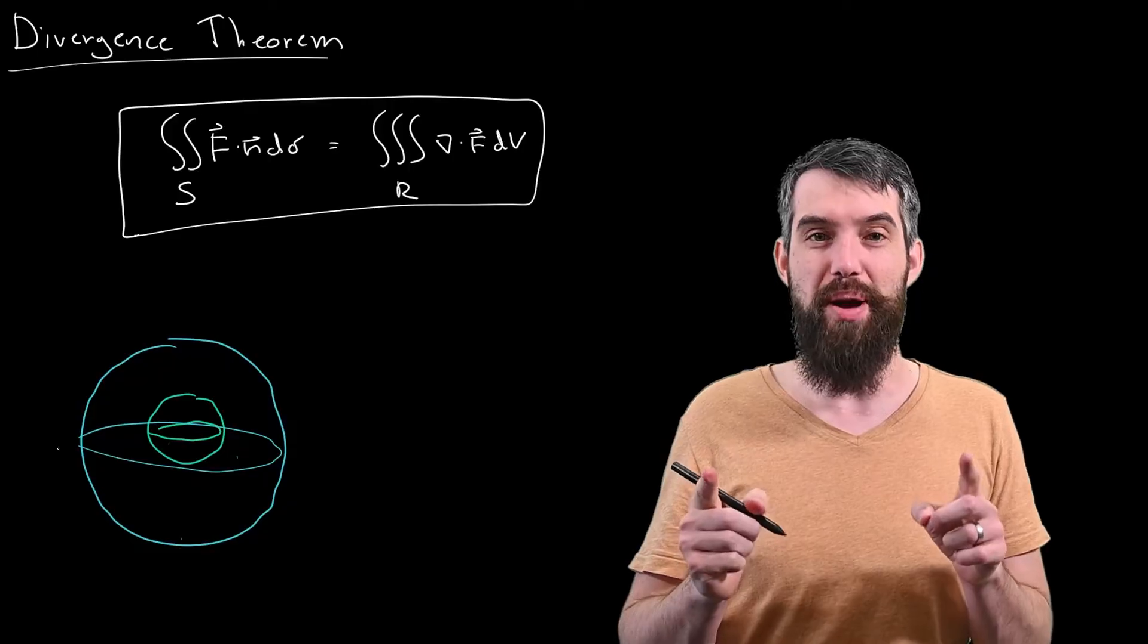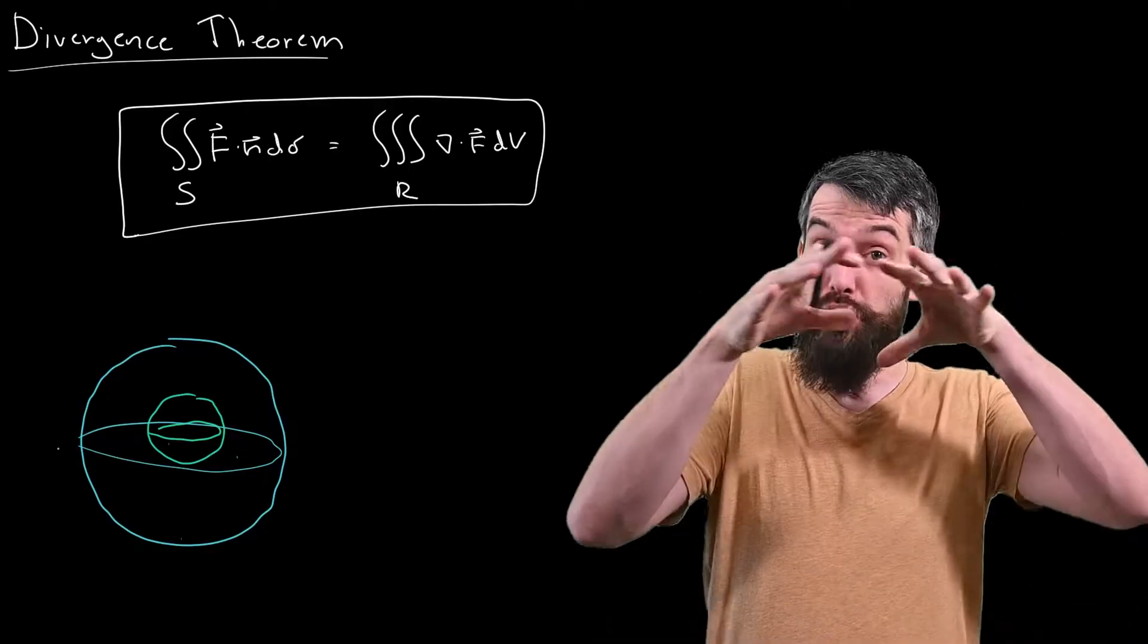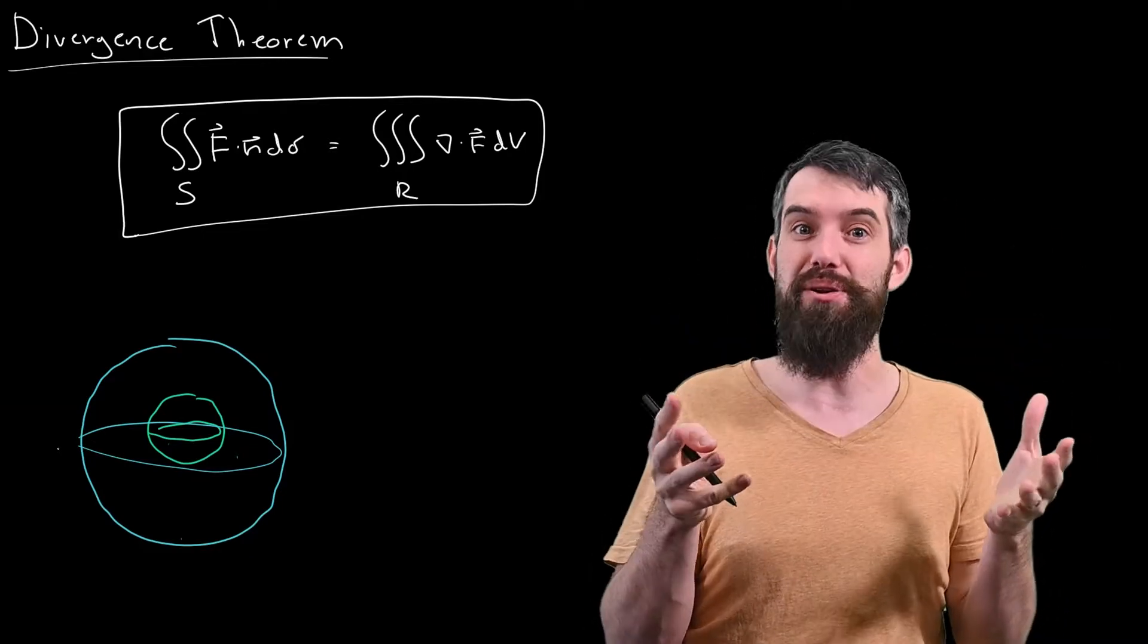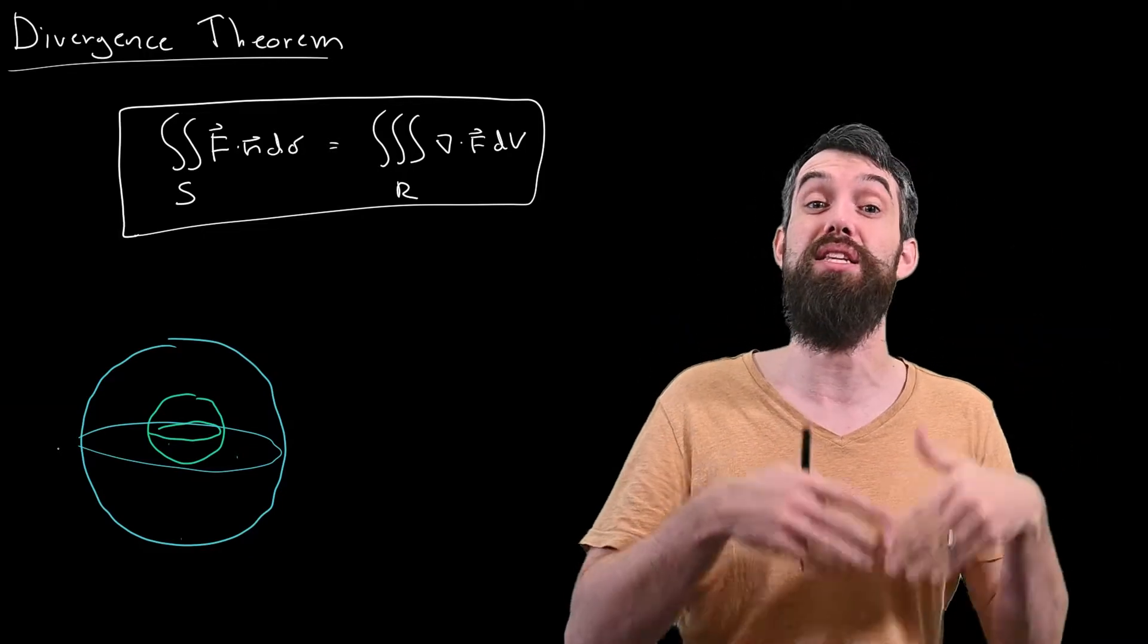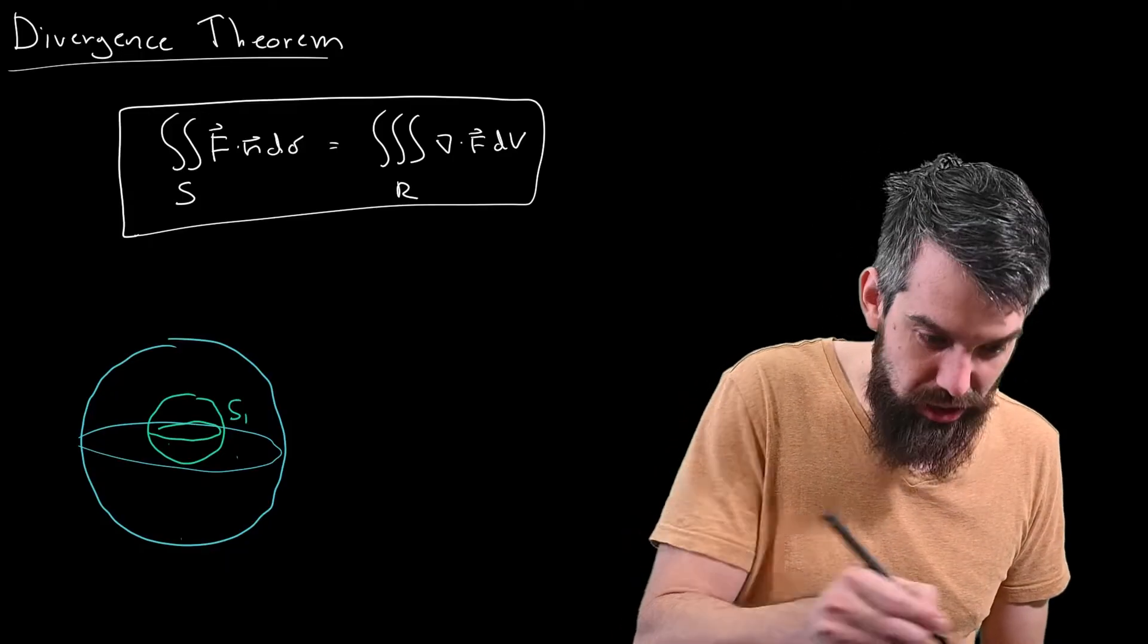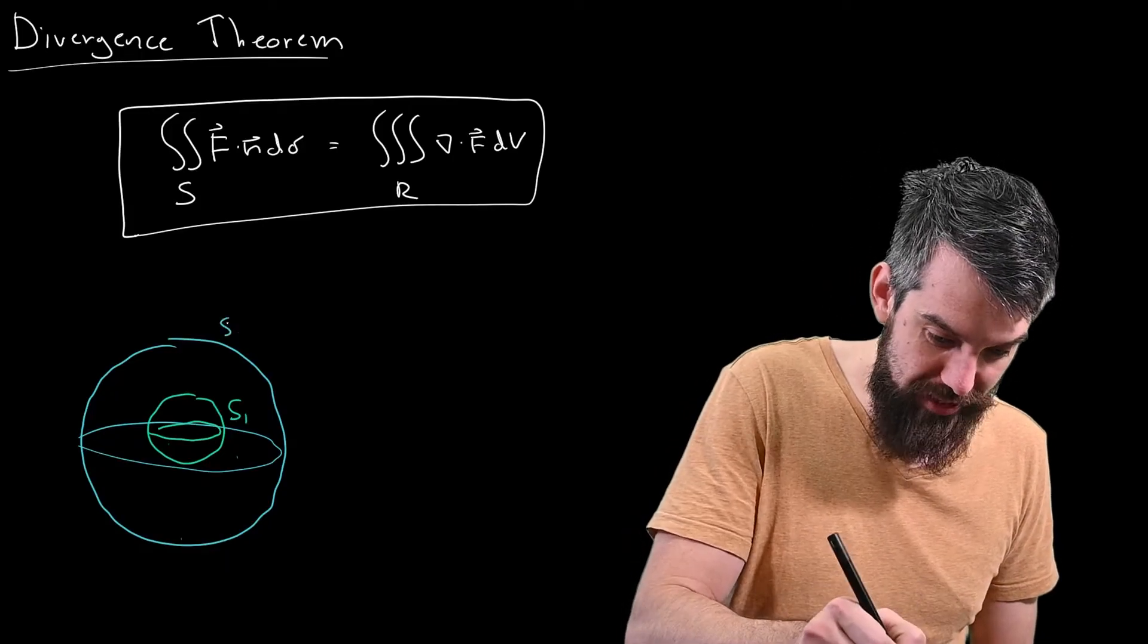So the region I'm talking about is that volume in between these two spheres. The outer surface of this region is the large sphere, and the inner surface of this region is the small sphere. Perhaps I'll call the inner surface S1 and the outer surface S2.